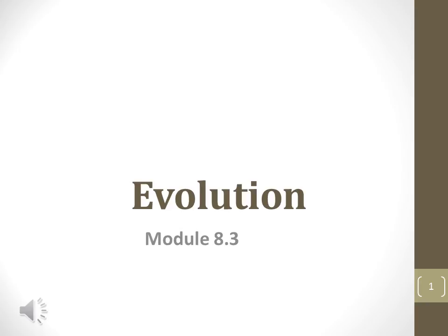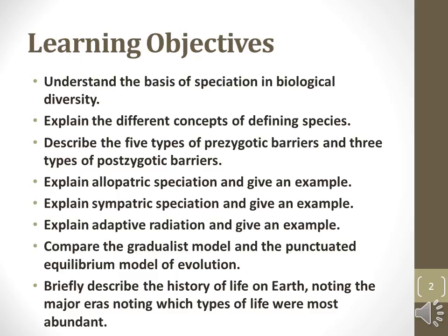This is the third narrated presentation for Module 8, Evolution. This portion of the module discusses how the processes of speciation can occur under different circumstances. Also discussed is how the history of Earth, which is divided into major eras classified by what forms of life are preserved in the fossil record. Major events shaping evolutionary history are discussed as well. Finally, the evolutionary relationships among different groups of organisms are presented.